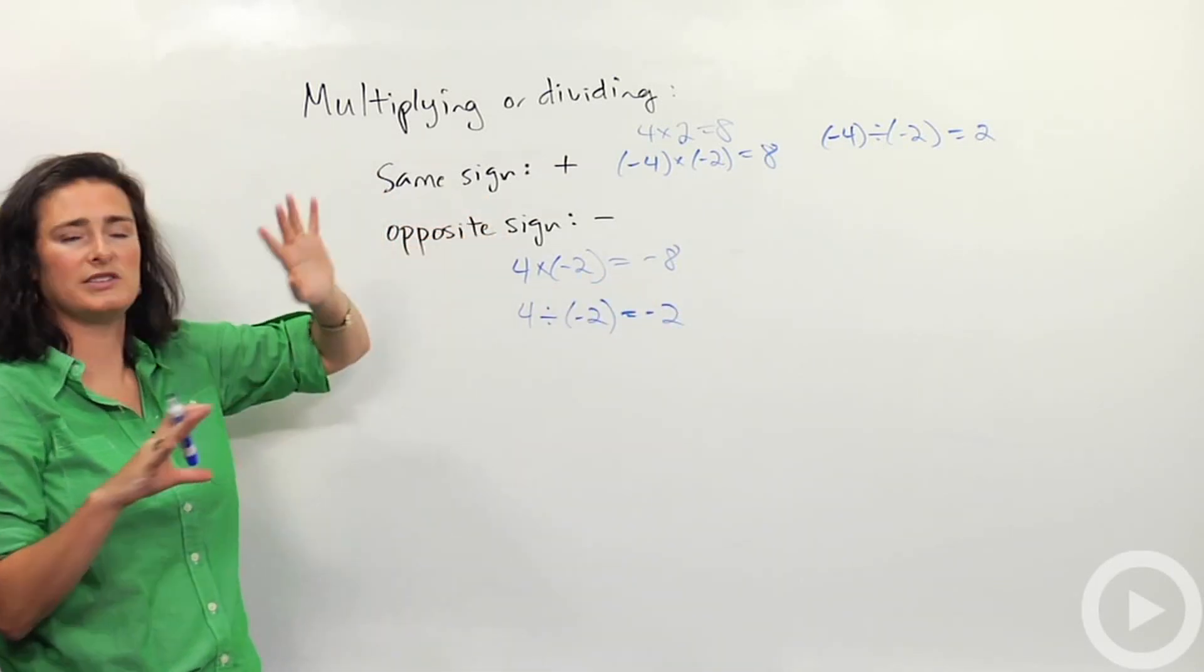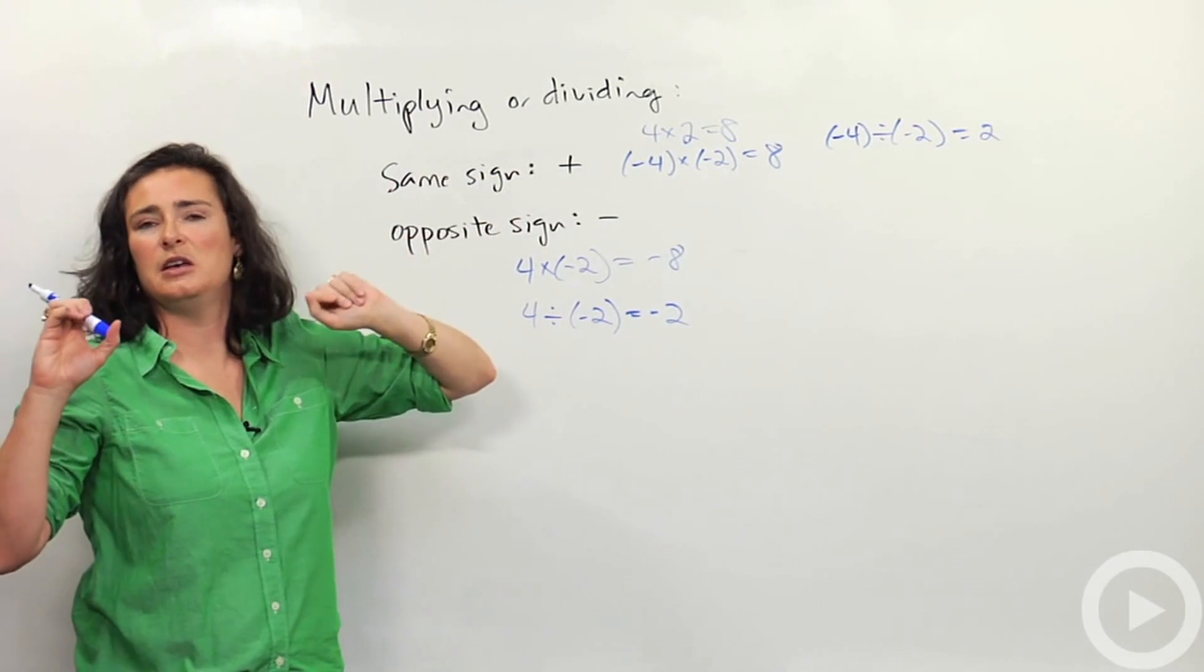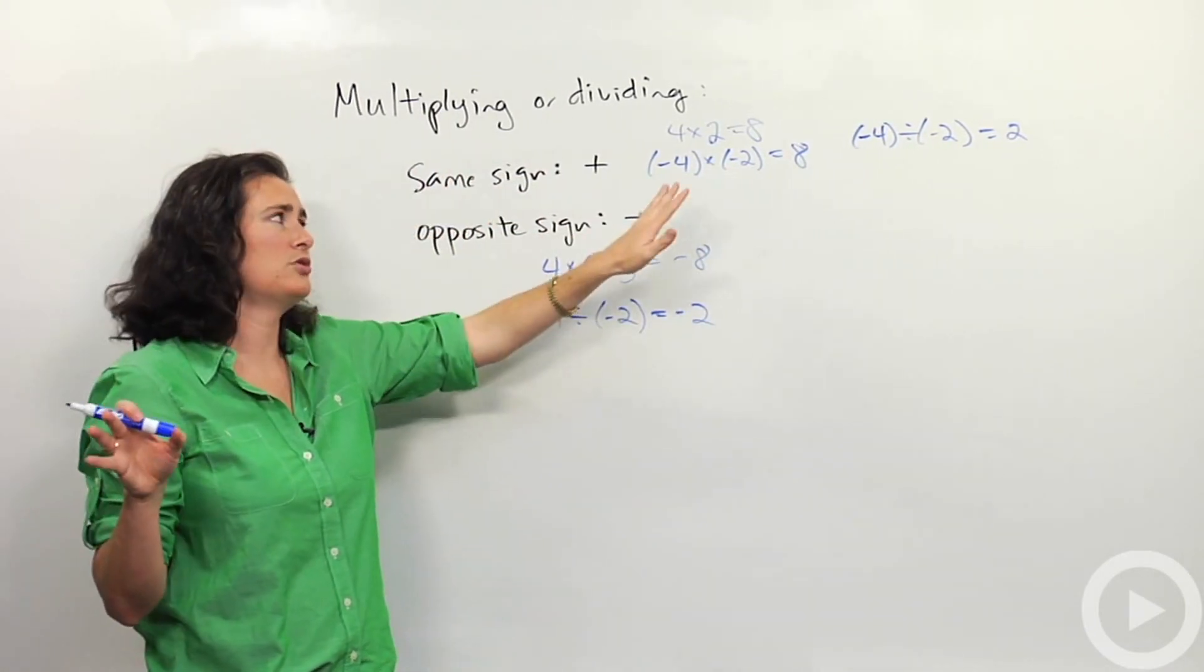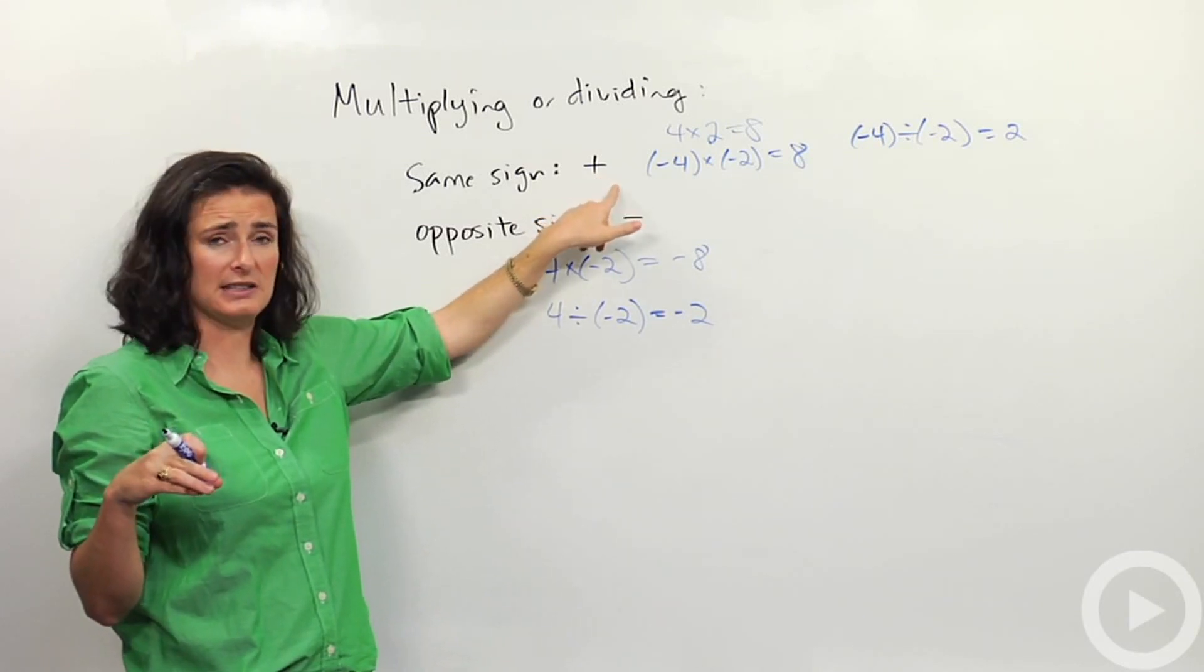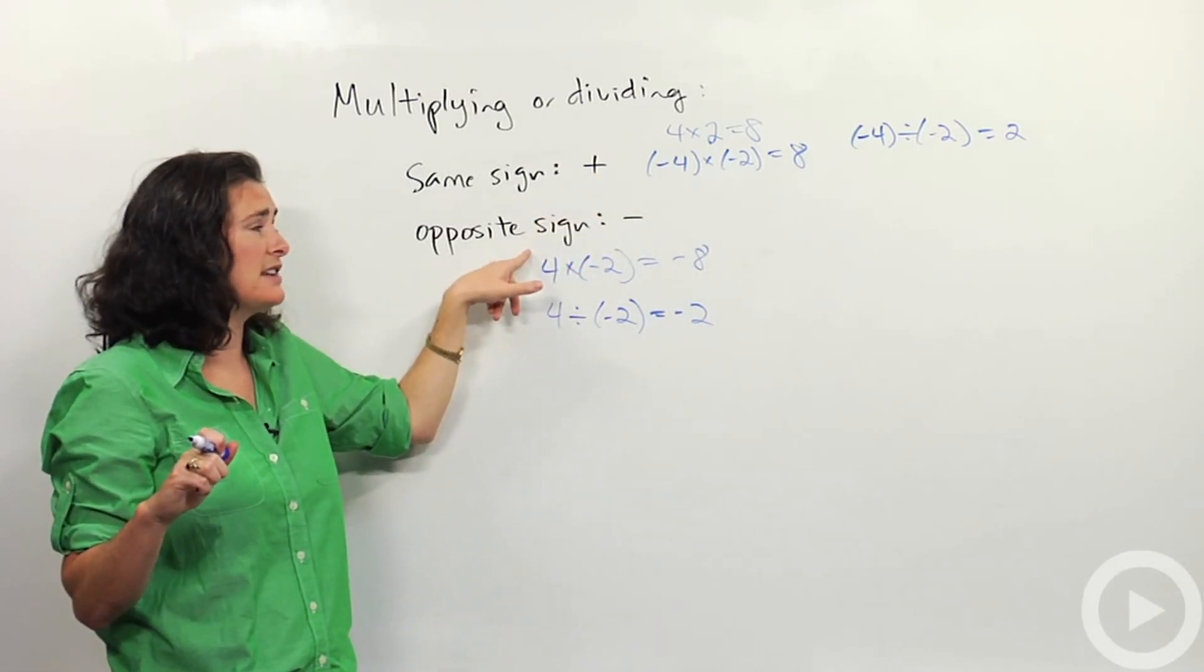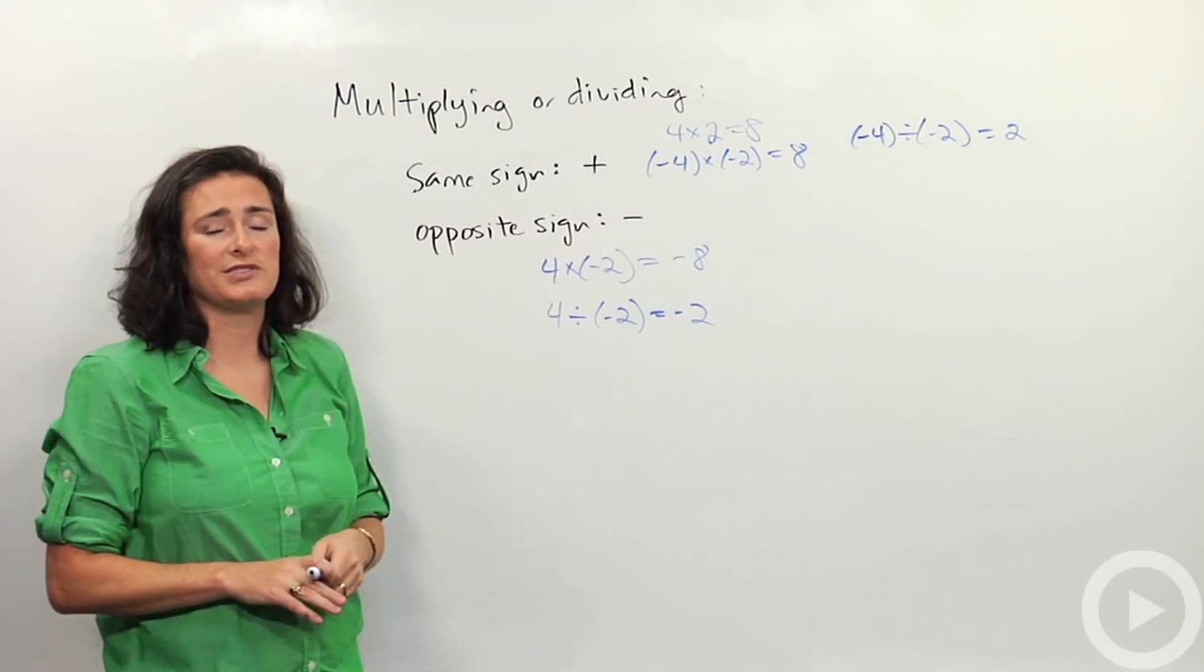So again, same sign, always. Fractions, decimals, integers, whole numbers, natural numbers, whatever you want. Same sign, meaning both positive or both negative, your answer is going to be positive. If the numbers have different signs or opposite signs, your answer is always going to be negative.